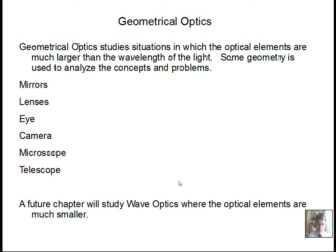In geometric optics, we deal with objects that light interacts with that are much bigger than the wavelength of the light, and we use geometry, trig functions, and angle considerations to analyze our problems. We'll be talking about mirrors, lenses, the eye, camera, microscope, and telescope — not all in this chapter, but we'll be investigating those situations.